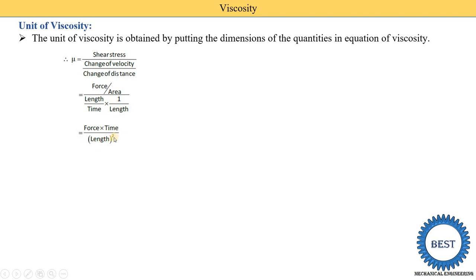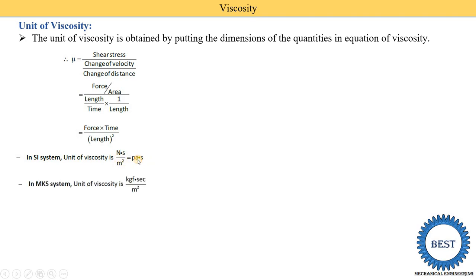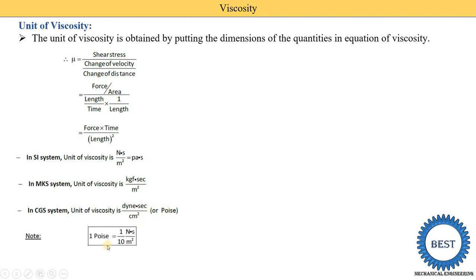For the SI system, the unit of viscosity is Newton·second per meter squared. Since Newton per meter squared is Pascal, the SI unit is Pascal·second. In the MKS system, the unit is kgf·second per meter squared. In the CGS system, the unit is dyne·second per centimeter squared, also called the poise. One poise equals 1/10 Newton·second per meter squared.